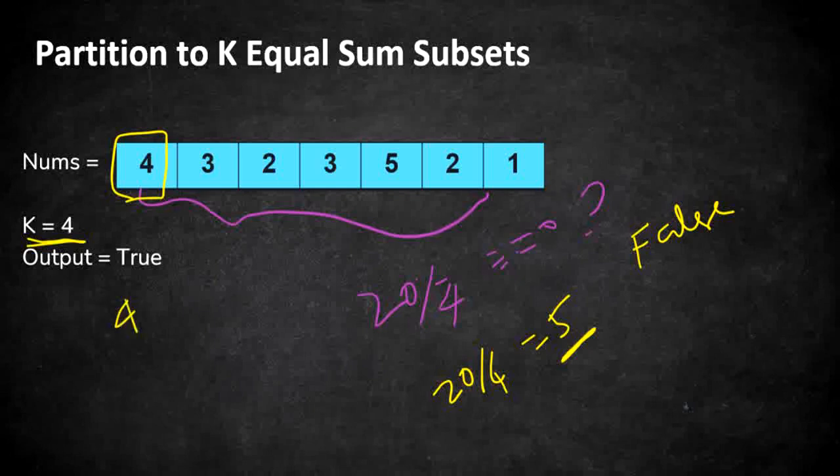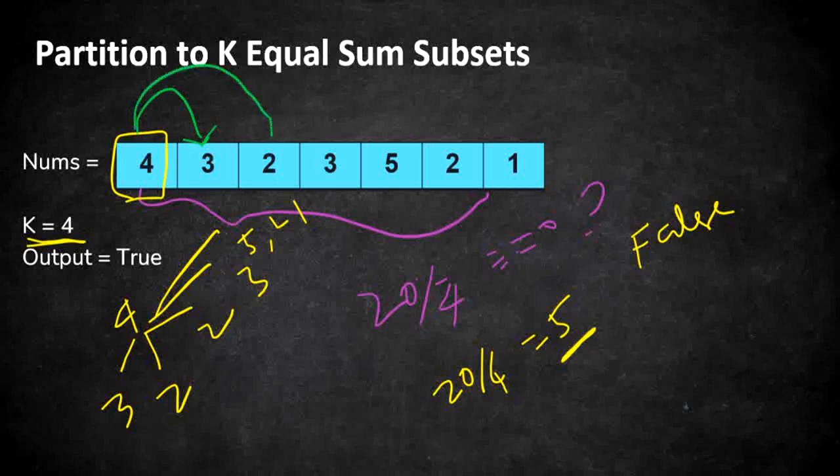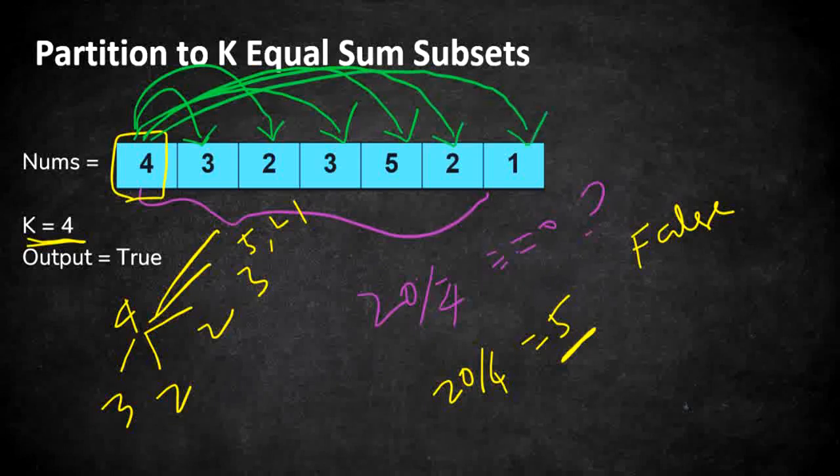Now 4 is at first we are going to explore 3, 2, 2, 3, 5, 2 and 1. So now starting with 3 if you add 4 with 3 then the sum would be 7 which is greater than 5. So you cannot pair it with 3 then goes to 4 plus 2 this is also greater than 5 then goes 4 plus 3 which is again 7 then 4 plus 5 which is 9, 4 plus 2 which is again more than 5 so finally 4 plus 1 is 5.